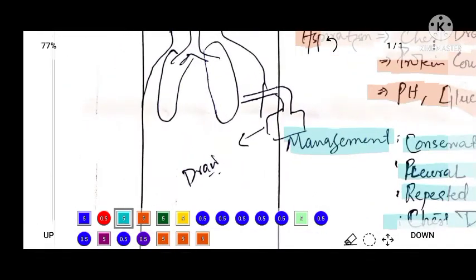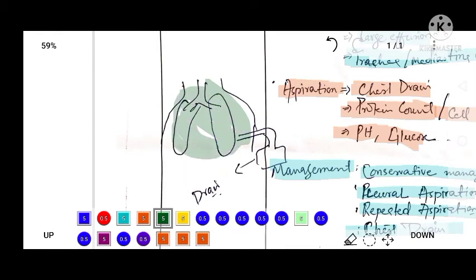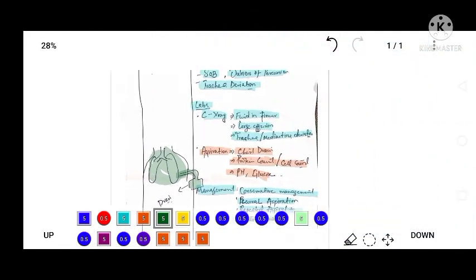Now let's suppose this is the chest cavity and the lungs are present in it. Chest drain is applied in order to remove the effusion fluid and treat the patient. So in this way we can treat the patient of pleural effusion.